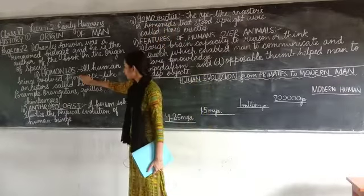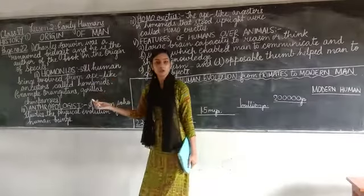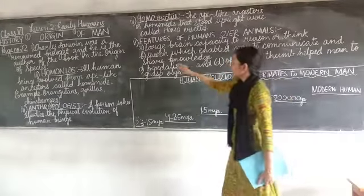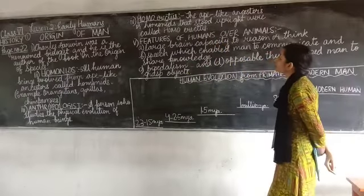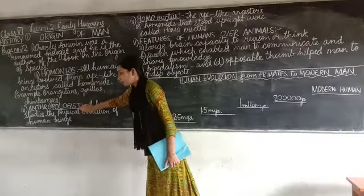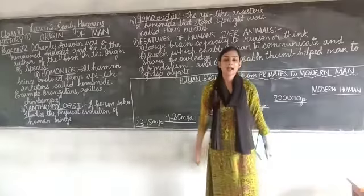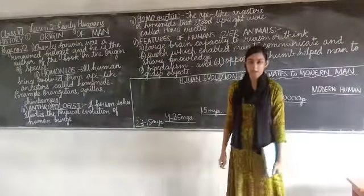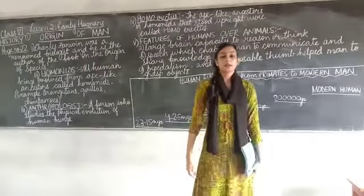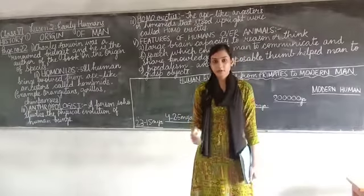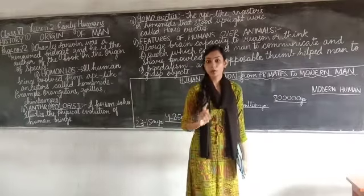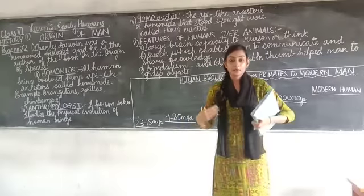Homo erectus were hominids — the humans that evolved from apes. Apes include monkeys, chimps, gorillas, and orangutans, which you can see at a zoo. The ape-like ancestors or hominids that stood up straight were called Homo erectus. We are able to stand upright because of our vertebra, the set of 33 bones that makes up our spine. Earthworms, for example, crawl because they have no bones and are not vertebrates.